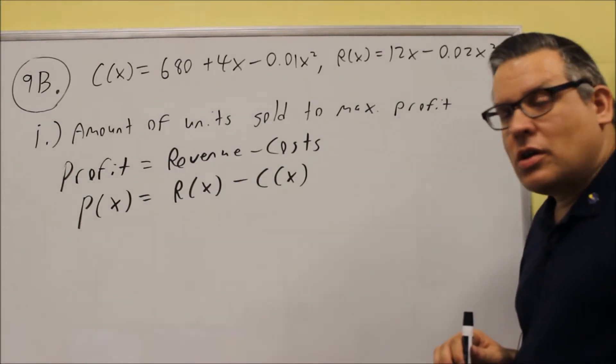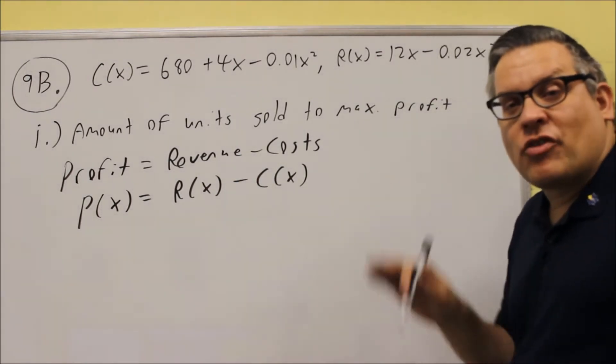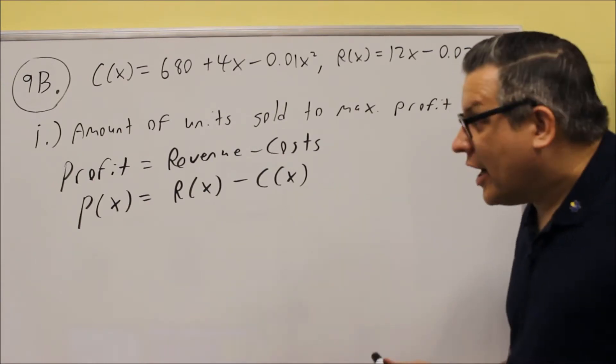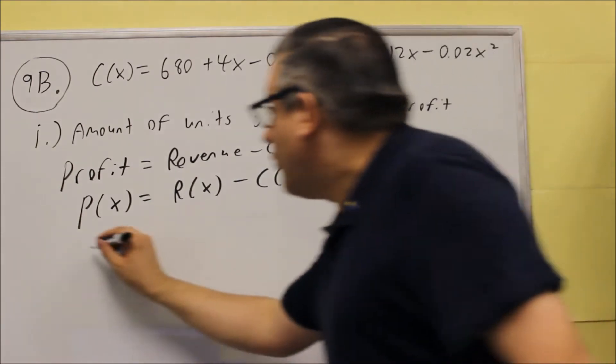So we have to find this first, and then once we find the profit function, then we're going to apply the vertex formula like we did in 9A.